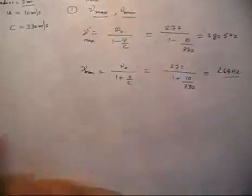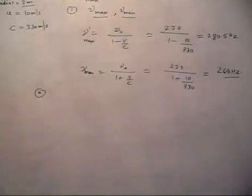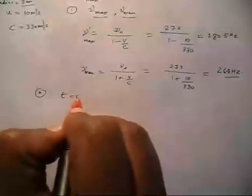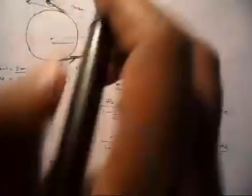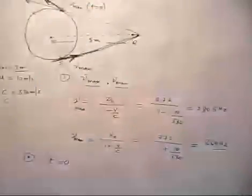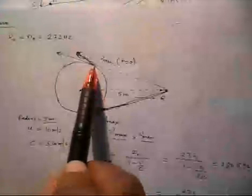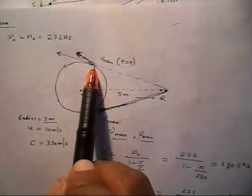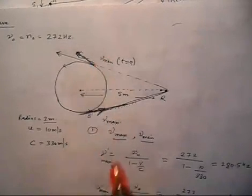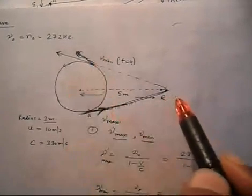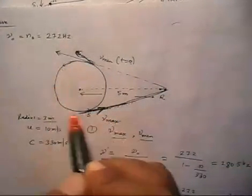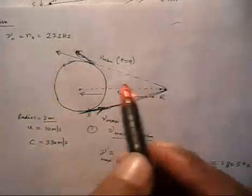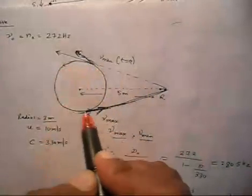Now Part B is slightly tricky. At t equals 0, the receiver receives the minimum frequency — so let us put t equals 0 at this point where the receiver receives the minimum frequency. We have to calculate the minimum value of time when the receiver receives the maximum frequency. This means the source will move from the minimum-frequency position to the maximum-frequency position, and we have to find the time required for that.